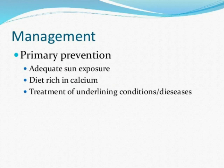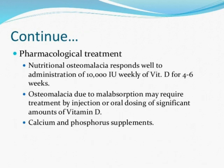For primary prevention of osteomalacia, adequate sun exposure is the most important preventive measure. Dietary intake of calcium also helps with bone function. Treatment of any underlying musculoskeletal conditions is also important — if underlying problems are properly treated, the risk for osteomalacia is reduced.